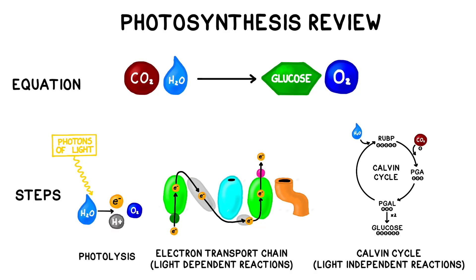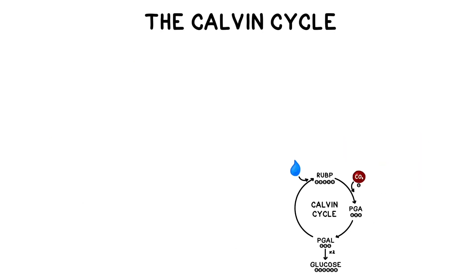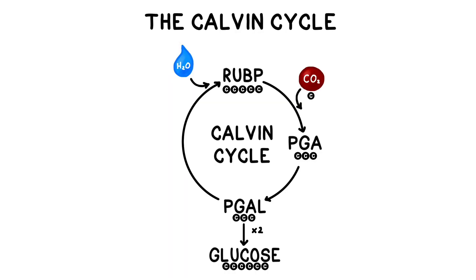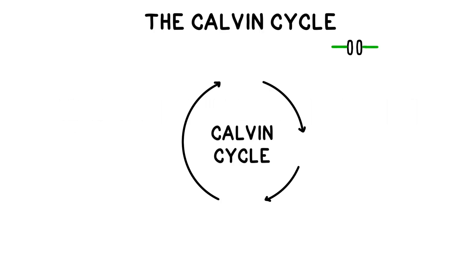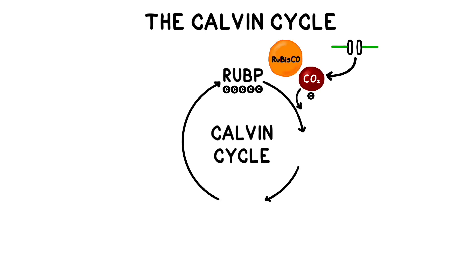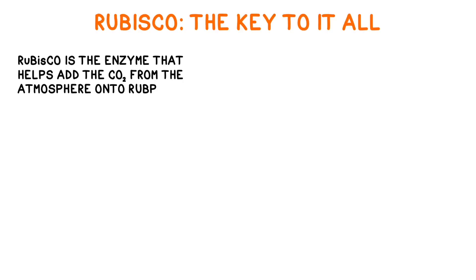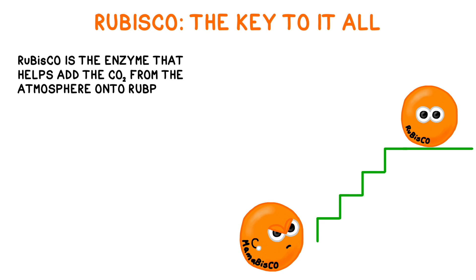The Calvin cycle is where we'll focus most of our attention today, because that's where C3, C4, and CAM plants really have specialized processes. In the Calvin cycle of photosynthesis, we take carbon from carbon dioxide and remix its components to make organic molecules. In the scientific context, organic just means something containing carbon. Carbon dioxide enters the leaf through tiny openings called stomata. The new carbons from that carbon dioxide are added to other carbons already in the cycle to make new molecules. The enzyme that does this is called Rubisco, and it's thought to be the most common protein on Earth.